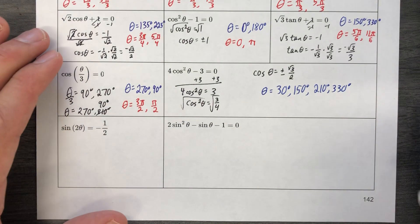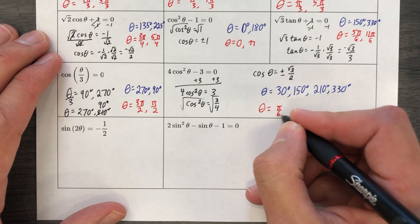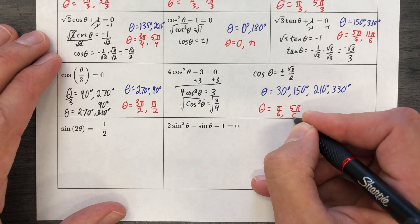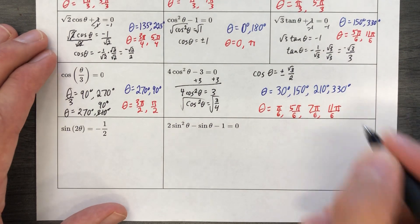All right, fun times. Let's get the radians on that. That's pi over 6, 5 pi over 6, 7 pi over 6, and 11 pi over 6.